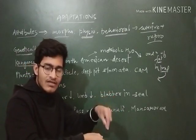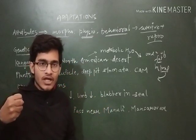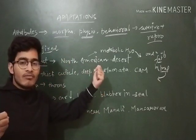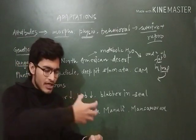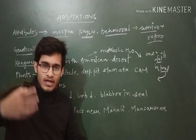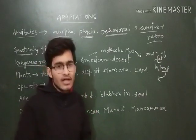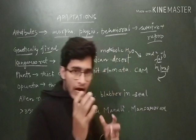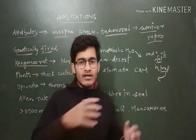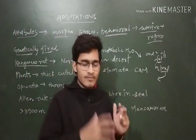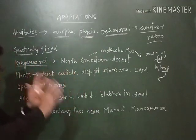When the kangaroo rat needs to excrete waste, it concentrates the filtrate — meaning it removes a lot of water. That removed water is utilized in the body and the concentrated filtrate is excreted out. Among mammals, it can concentrate urine to a great extent. So there are two things: oxidation of fat produces water as a byproduct which can be utilized, and concentration of filtrate also produces recoverable water — these are the adaptations by which the kangaroo rat survives in the desert.